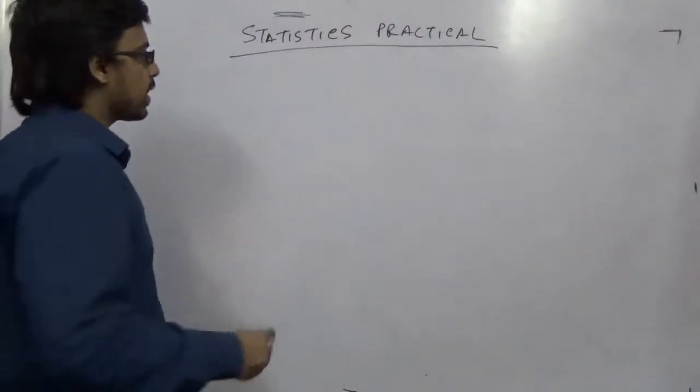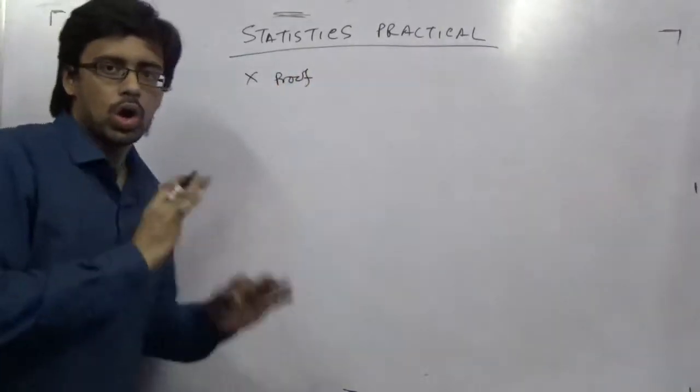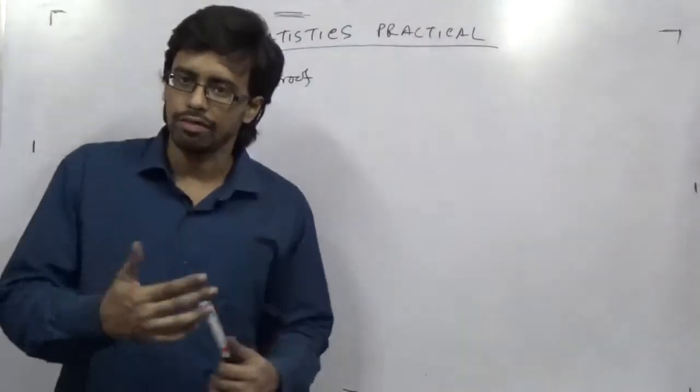It's very easy. The Statistics Practical doesn't have proofs. They don't have it. So what do they have?